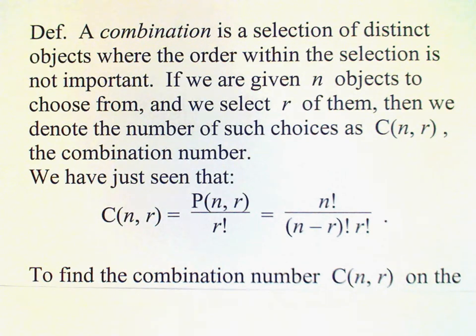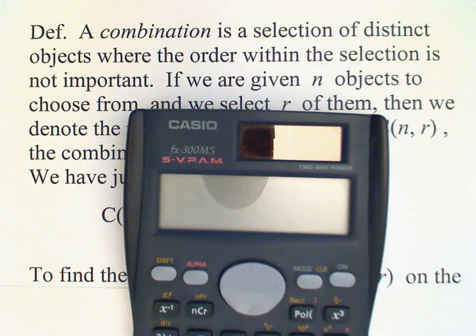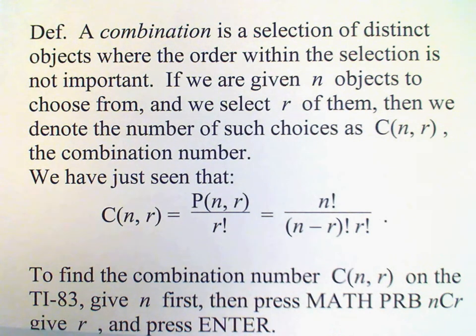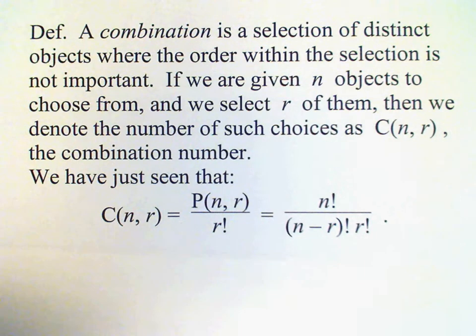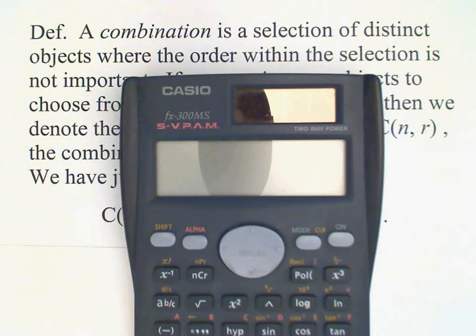And we can also use our calculators to find C(n, r) just as we did with P(n, r). For example, if we have a five element set and we want to find the number of three element subsets, that's a combination number C(5, 3).